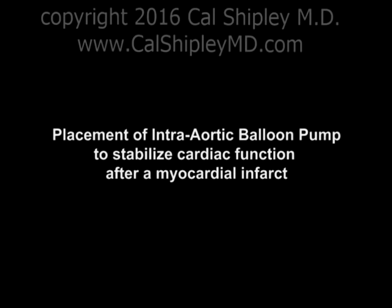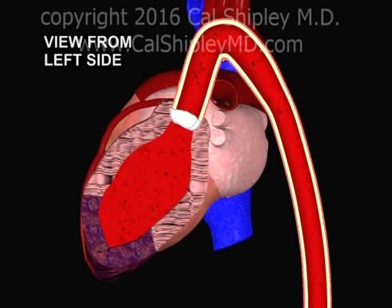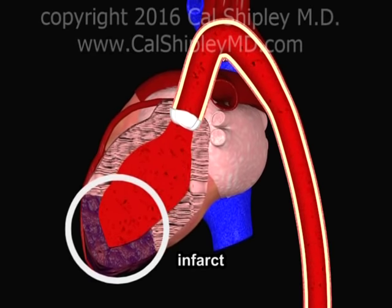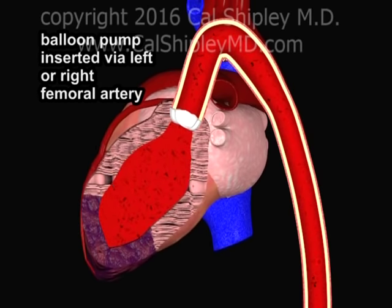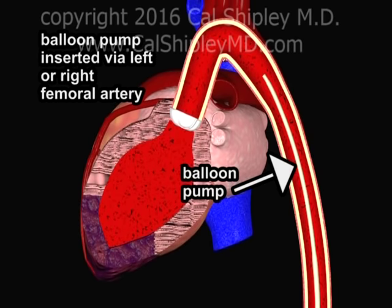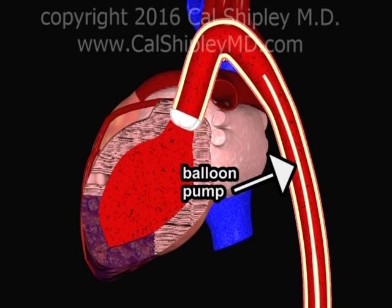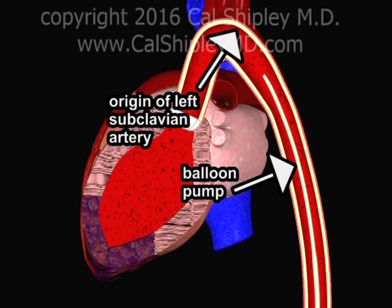In such situations, placement of an intra-aortic balloon pump may break the vicious cycle and stabilize cardiac function. The balloon pump is typically inserted via the left or right femoral artery in the groin and then advanced into the upper aorta and positioned such that the end of the balloon is a couple of centimeters away from the origin of the left subclavian artery in the aortic arch.